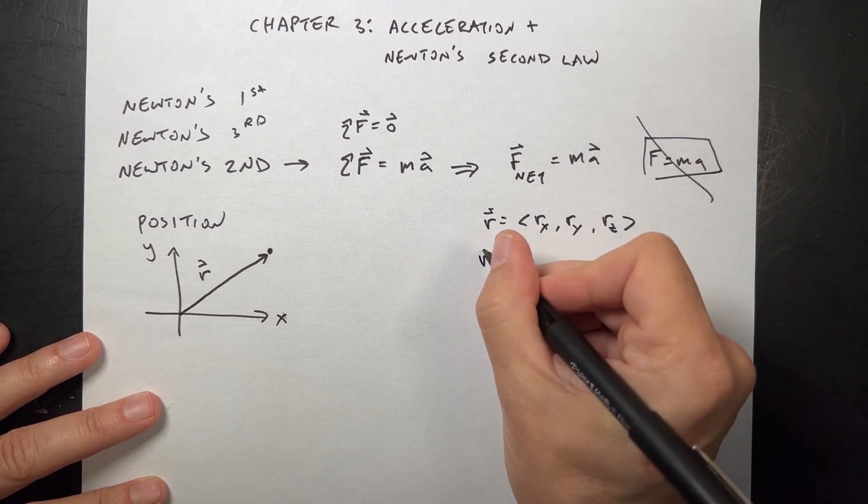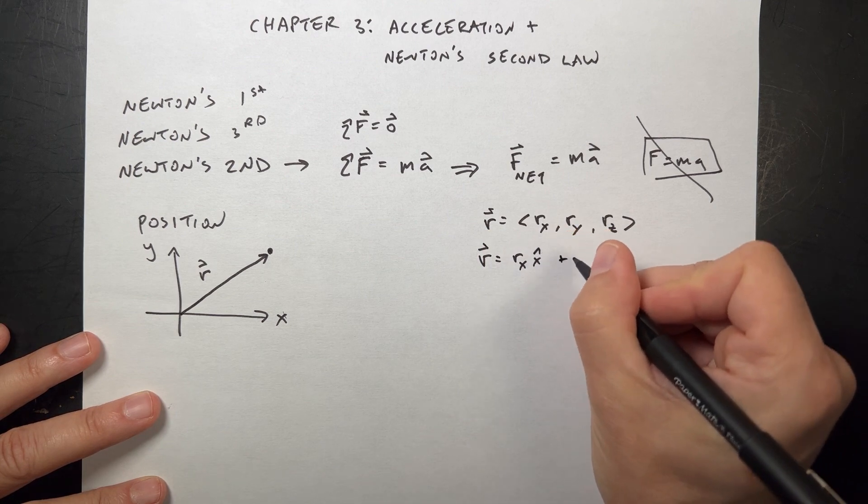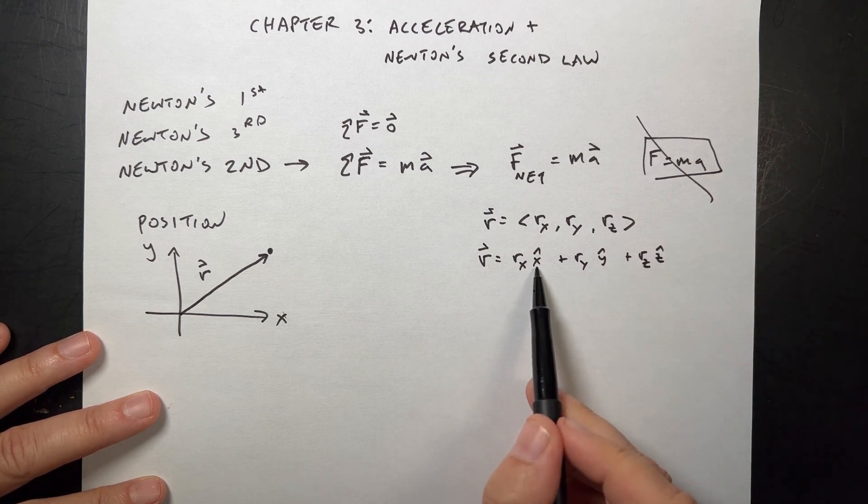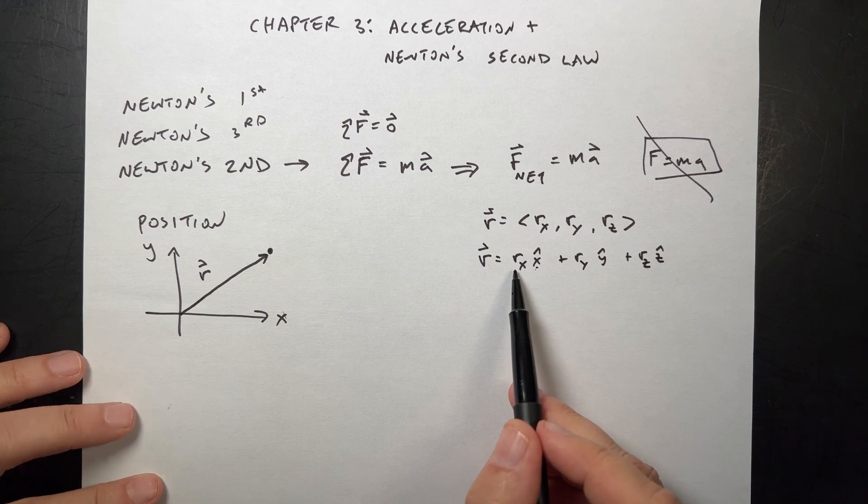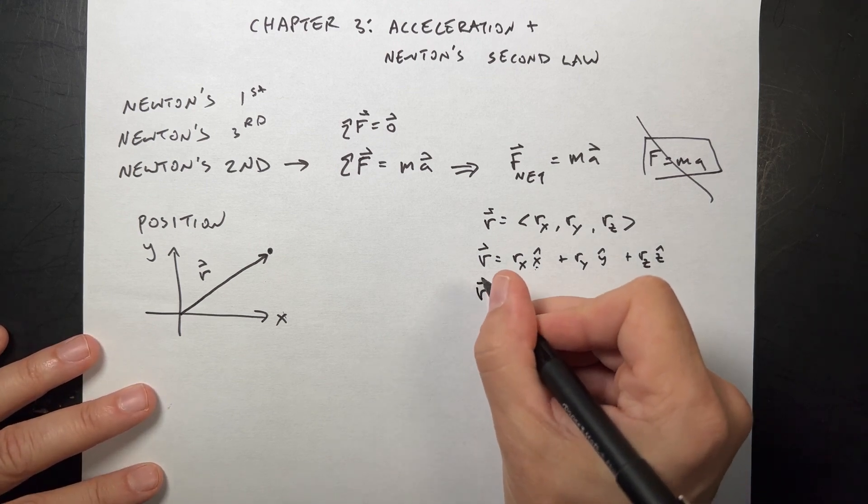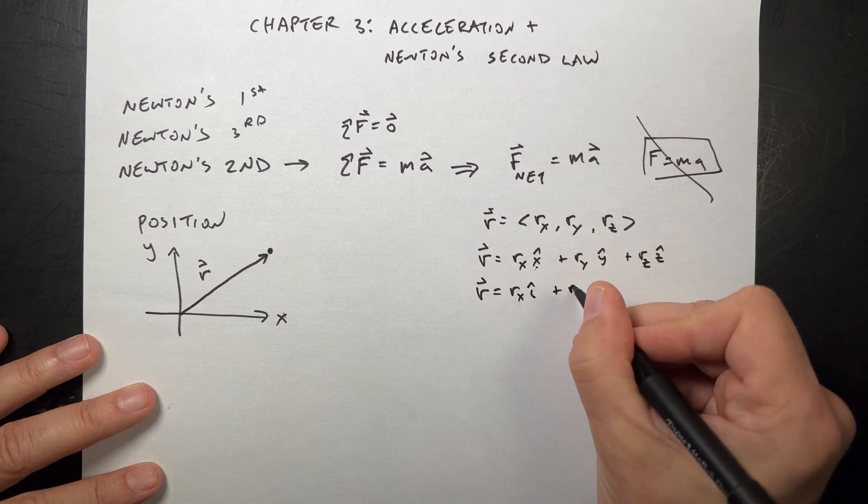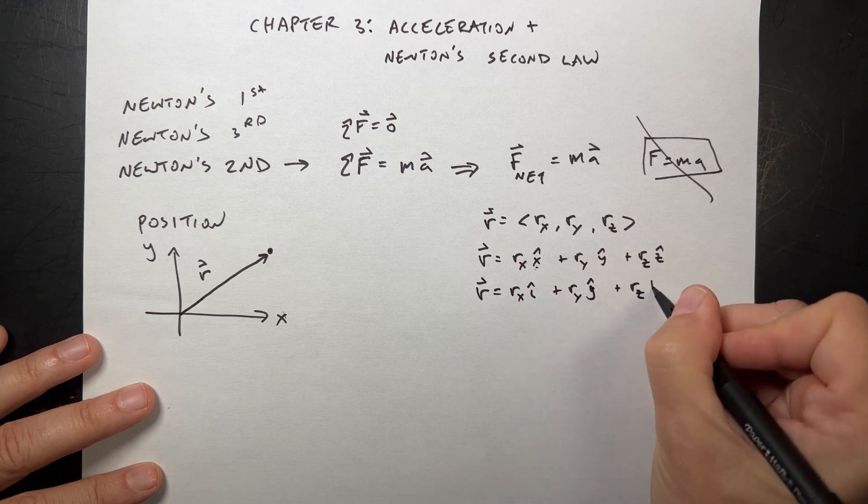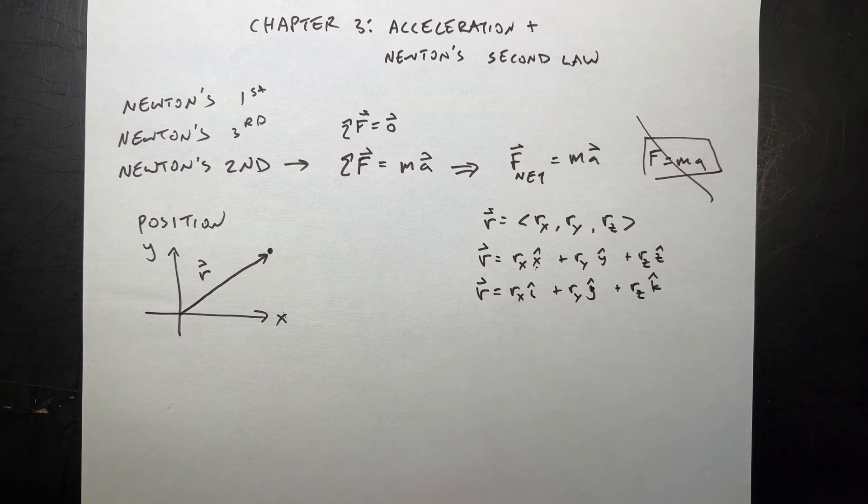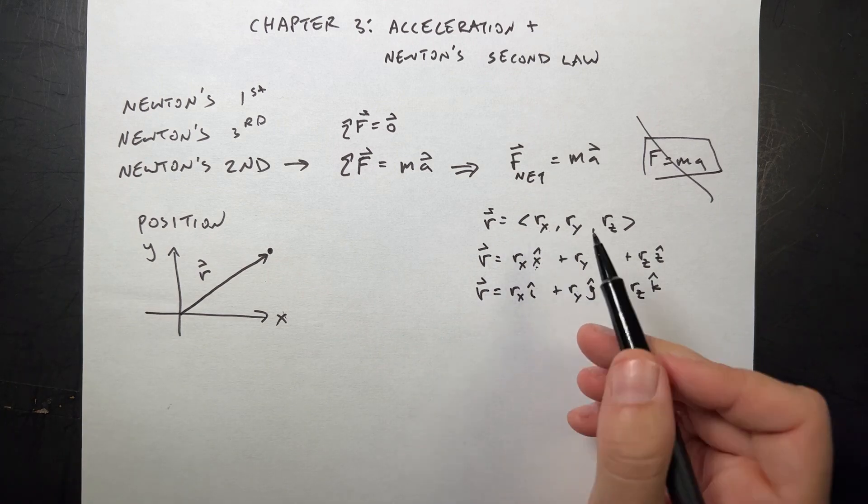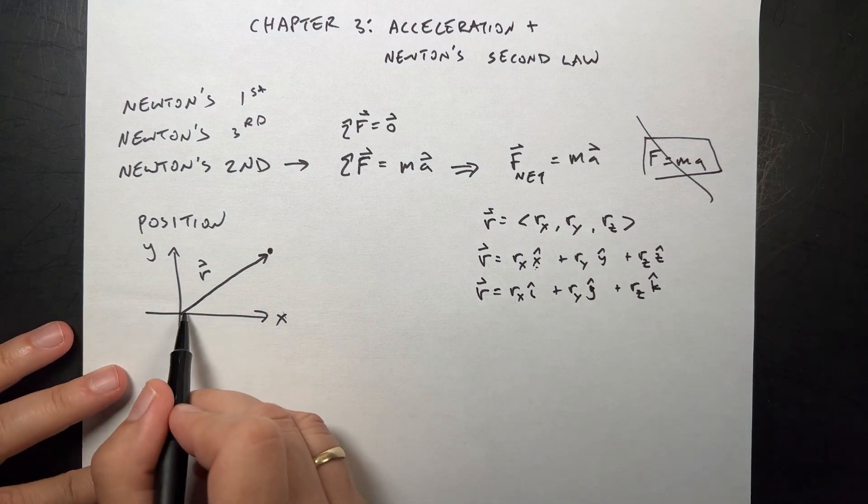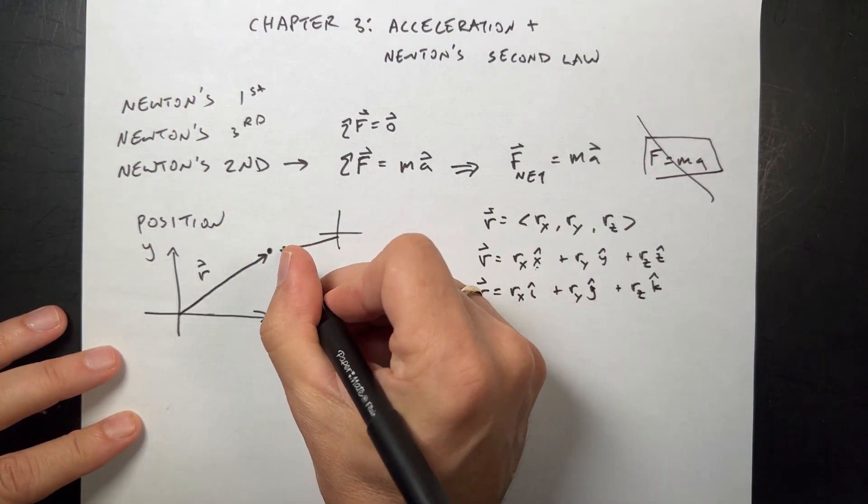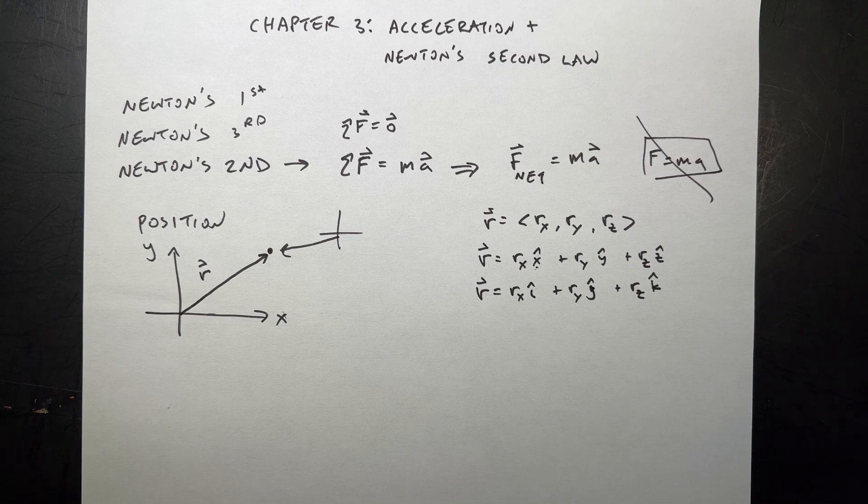How do you write a vector? I write it as R equals Rx, Ry, Rz. I write it as a component. There's my X component, Y component, Z component. This book does it like R equals Rx X hat plus Ry Y hat plus Rz Z hat. This just says that's in the X direction, and this is the magnitude of that vector in the X direction. The other way to write it is Rx i hat plus Ry j hat plus Rz k hat. They just use i, j, k for the unit vectors. I like this one because it's the shortest. It does depend on the location.